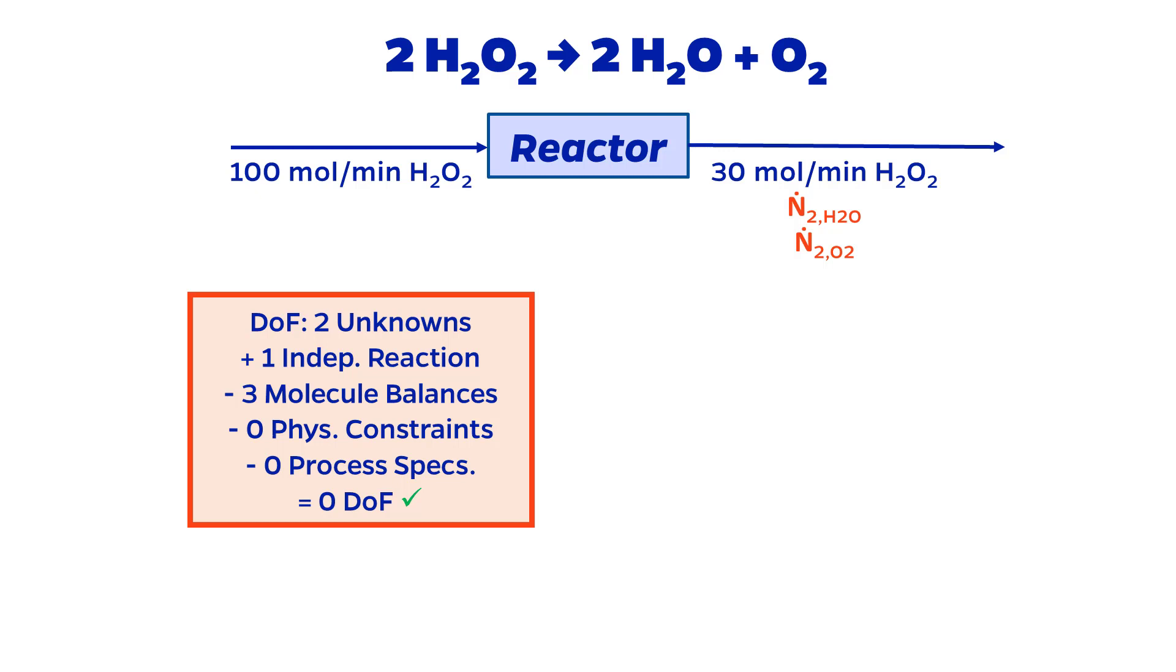If process specifications or physical constraints apply, those are subtracted as well. In this case, however, there are neither because the problem statement has no other information and I've labeled the species flow rates instead of the total flow rate and composition. Therefore, DOF in this problem is 2 plus 1 minus 3 equals 0.